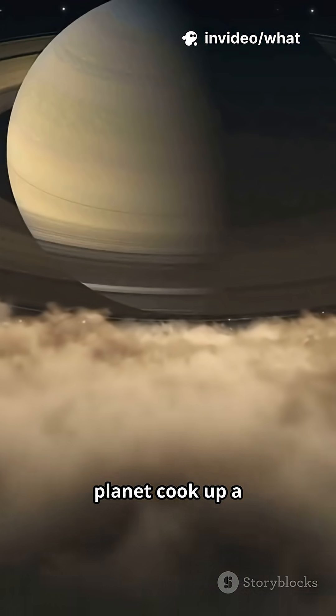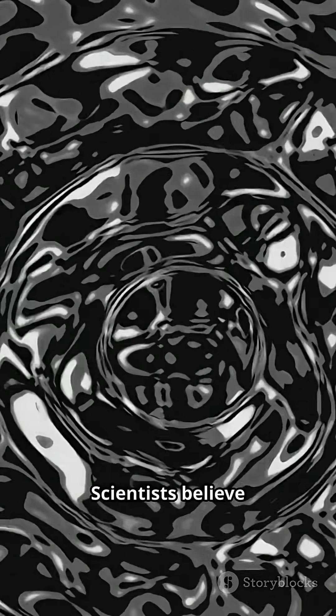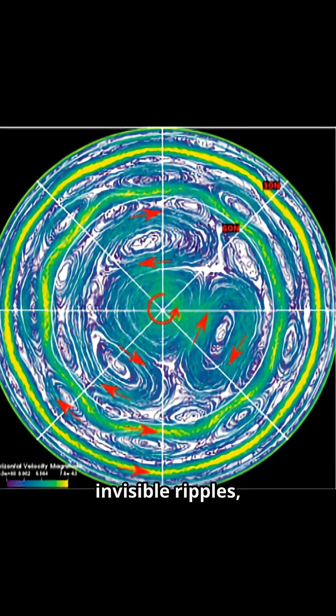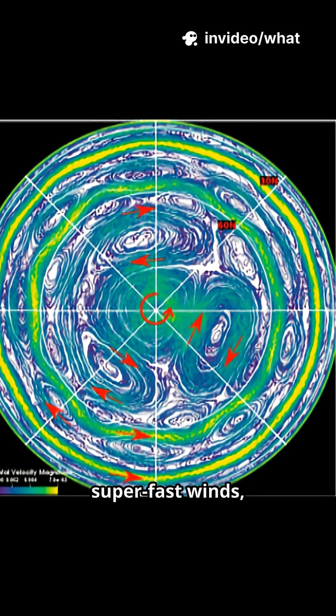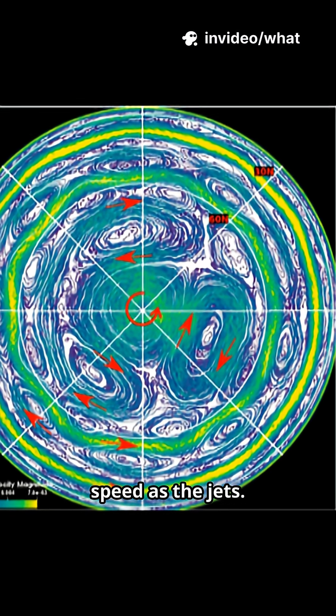But how does a planet cook up a storm with perfect angles? Scientists believe it's all about atmospheric waves. Think of them like invisible ripples caused by Saturn's super-fast winds, meaning the waves move at the same speed as the jets.